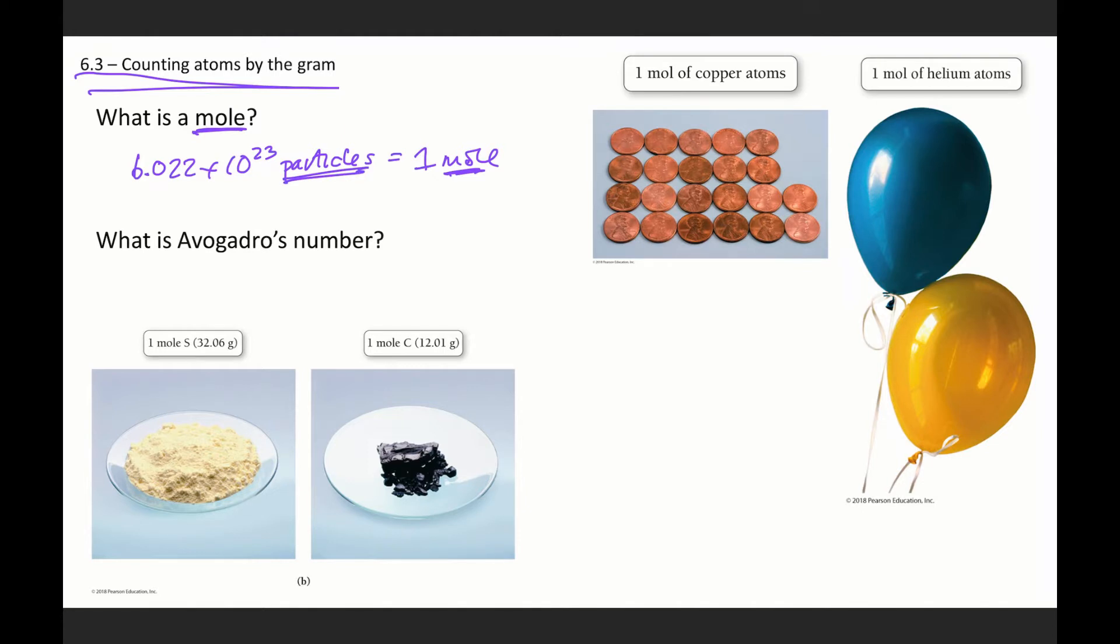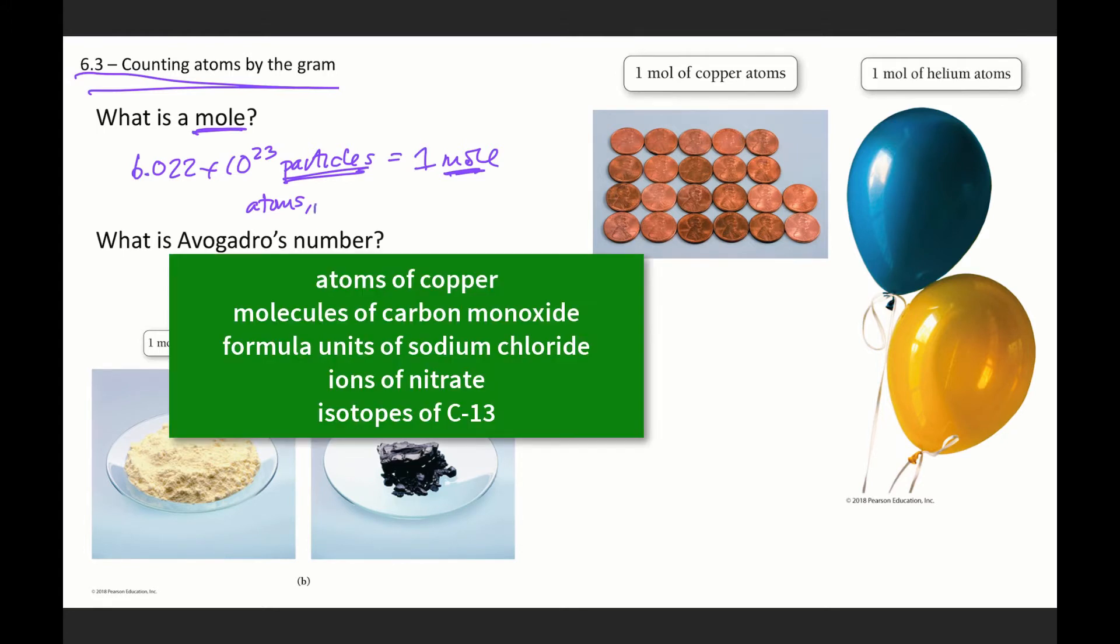And so that means we need to be mindful about our particle words. This goes back to Chapter 5 where we talked about atoms. If we're talking about an element, atoms would be the appropriate particle word. If we're talking about either a molecular element or a molecular compound, molecule would be the appropriate particle word. Formula units, if we're talking about an ionic compound. We could even be talking about ions if we were breaking down our formula units. All of these words could stand in for particle.